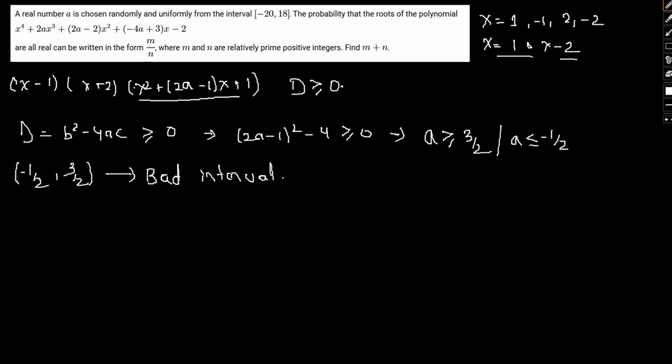So now the length of the interval where a can be chosen is 38 units long. So how can we arrive at that? So here minus 20 to 18, if we count all the numbers in the number line that lies in between these two including both of them, so it will simply be total 38 units long.